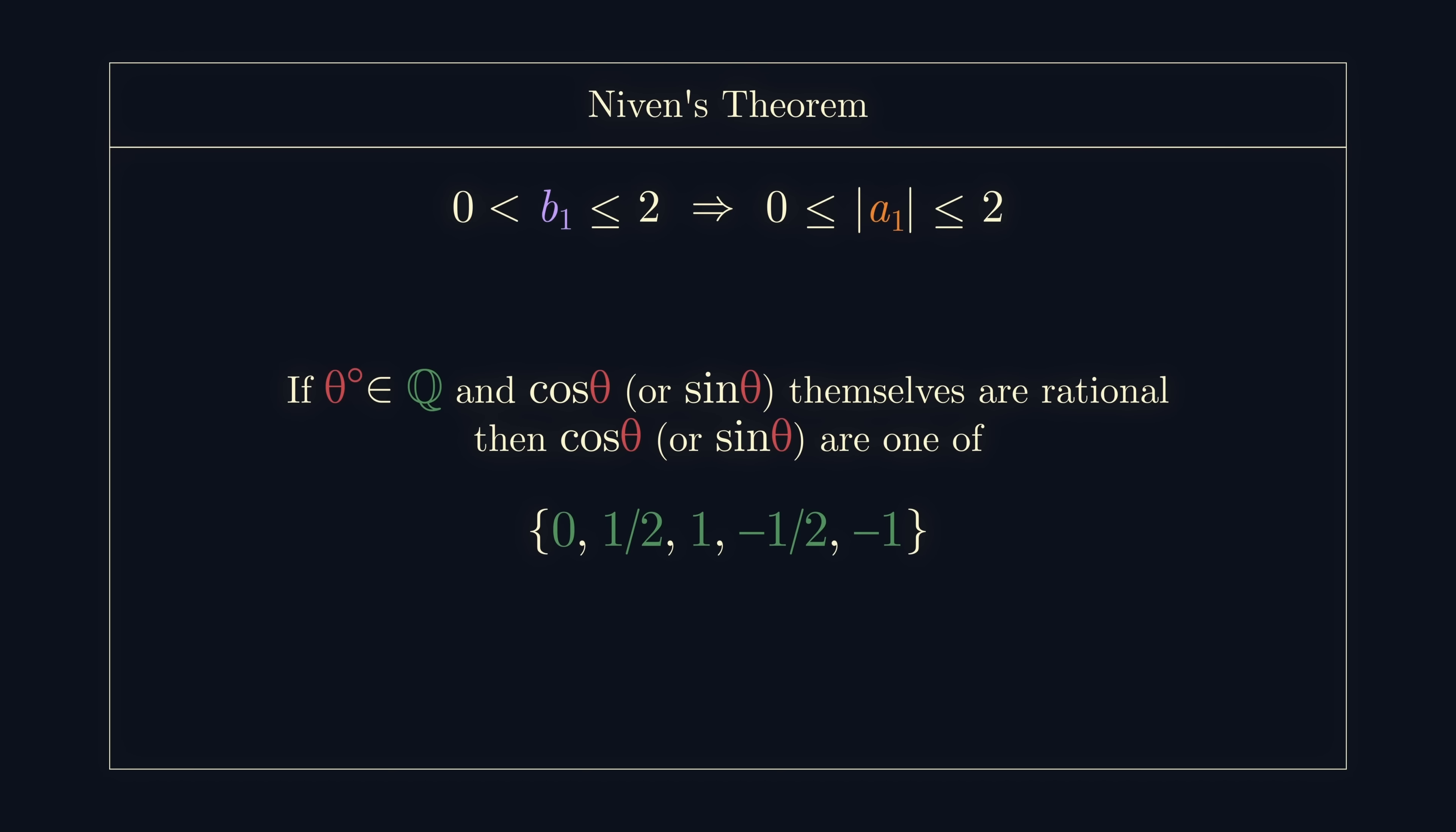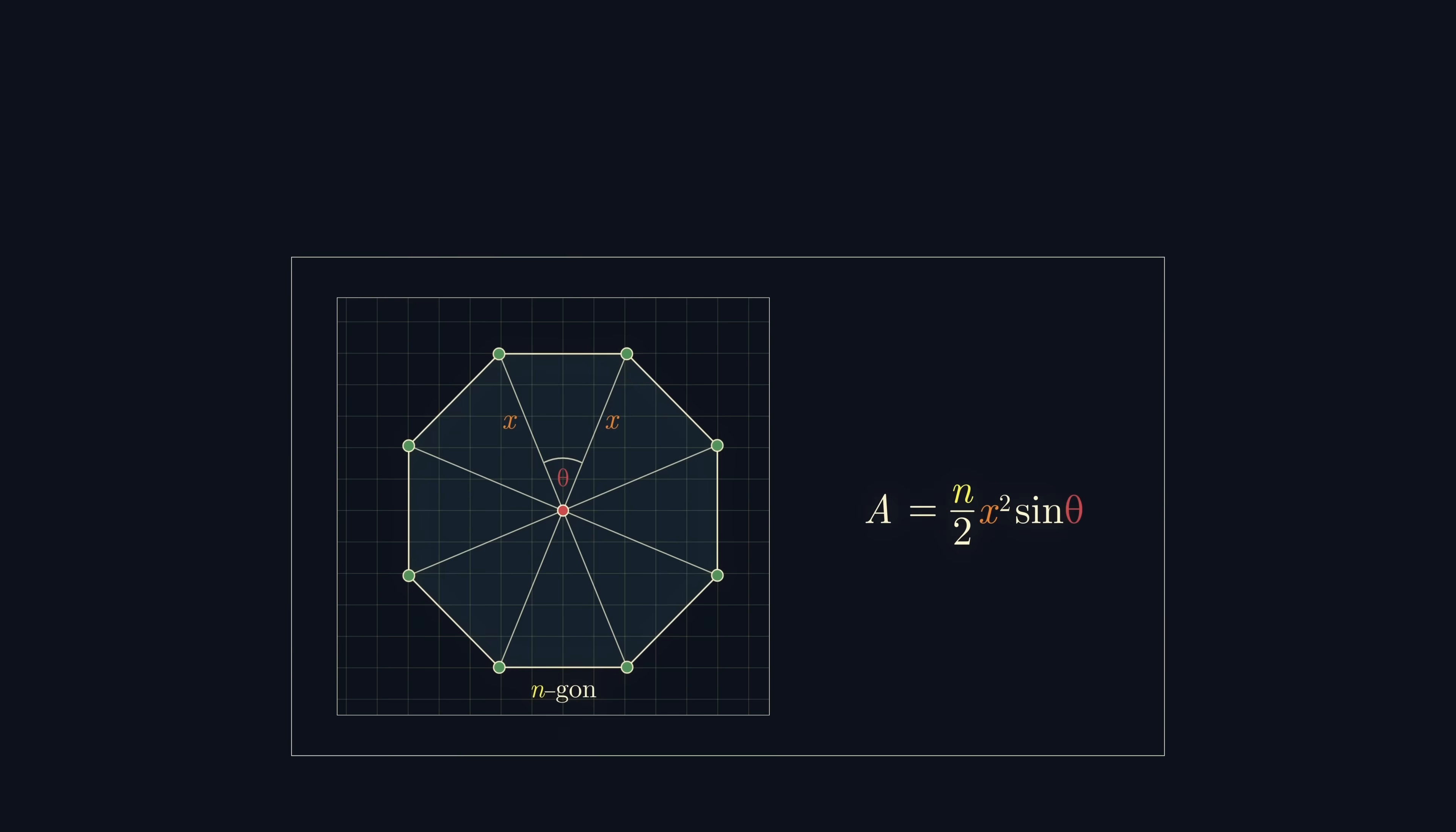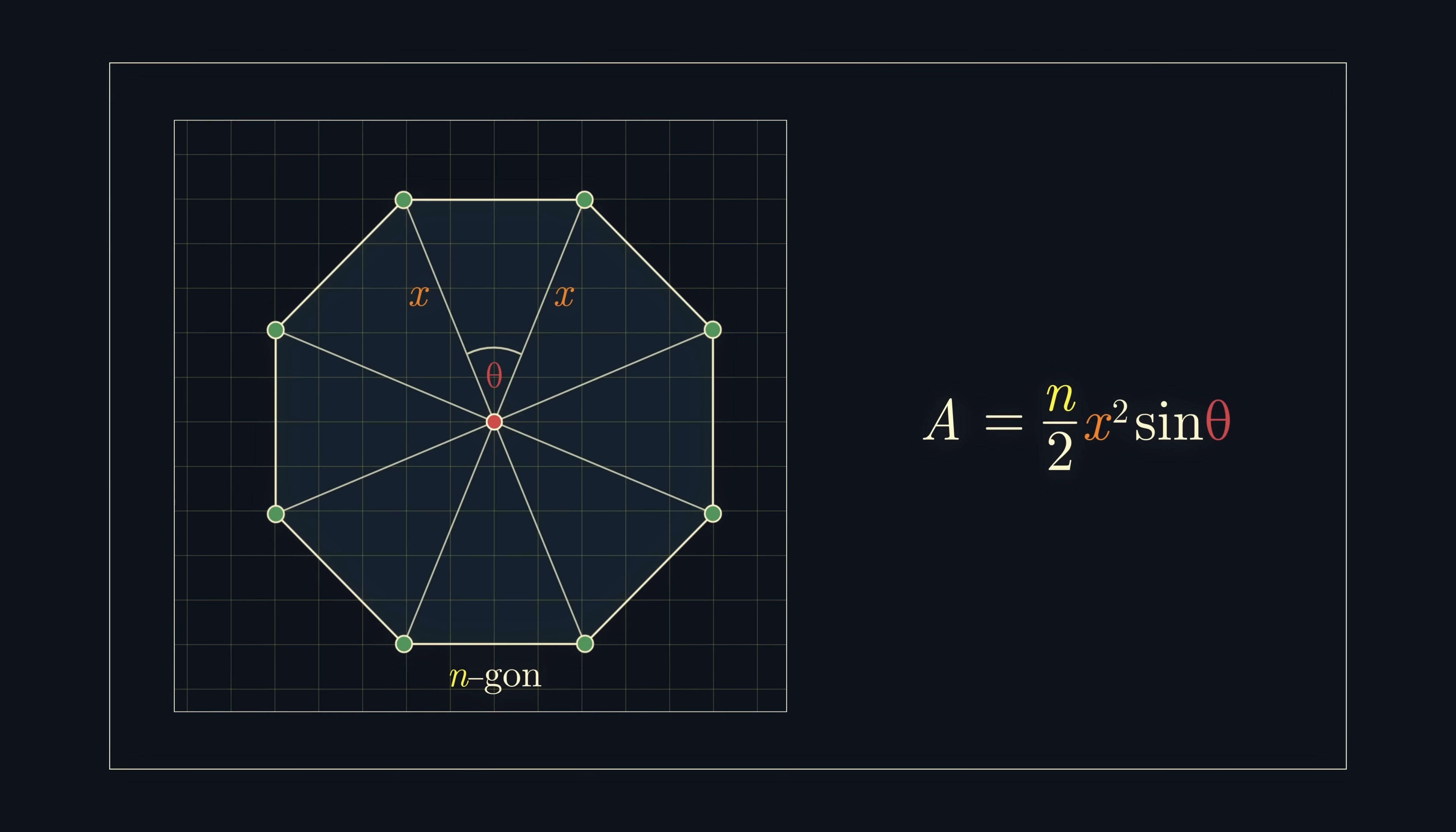Wow, that got awfully number theoretic. But why did we do this all in the first place? Well, we wanted to see if it was possible for the area of our regular n-gon to be rational. Unfortunately, we just showed that the sine of any rational angle must be irrational unless n equals 4 or n equals 12.